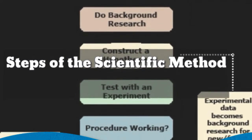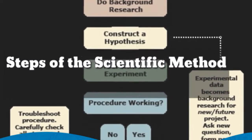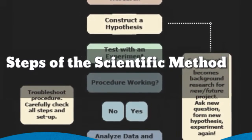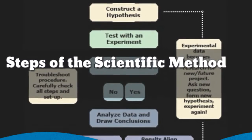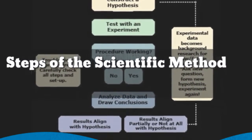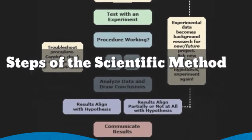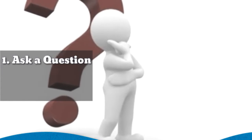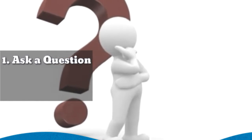Even though we show the Scientific Method as a series of steps, keep in mind that new information or thinking might cause the scientist to back up and repeat steps at any point during the process. The first step of the Scientific Method: